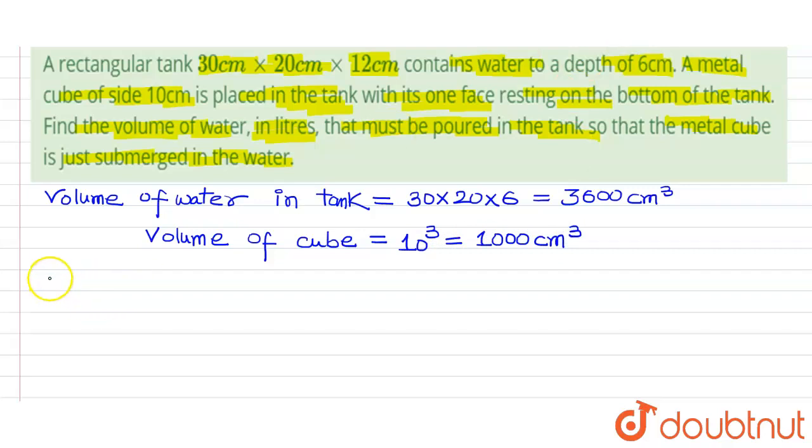Now, take the sum, that is the volume of water in tank plus volume of cube. This will be equals to 4600 centimeter cube.